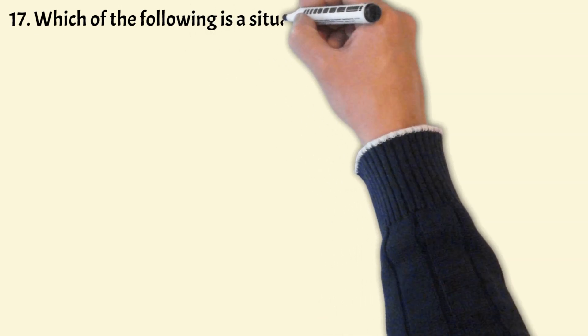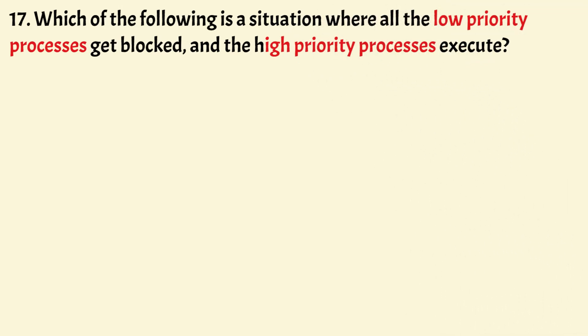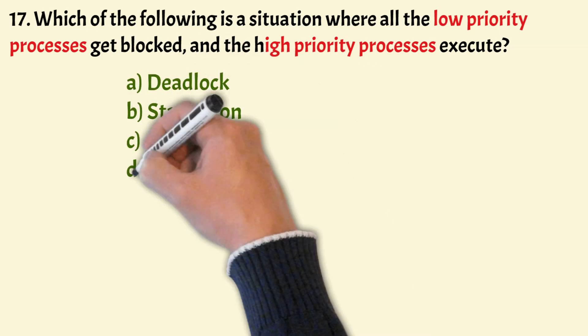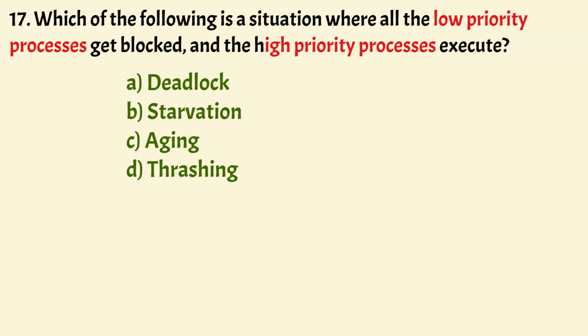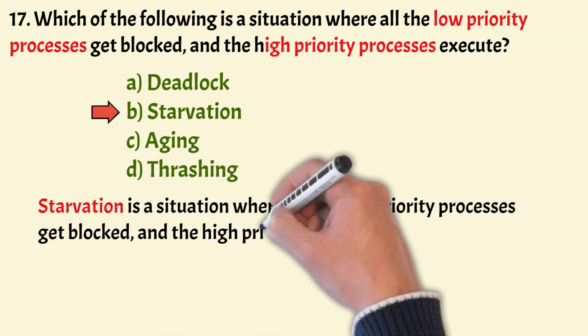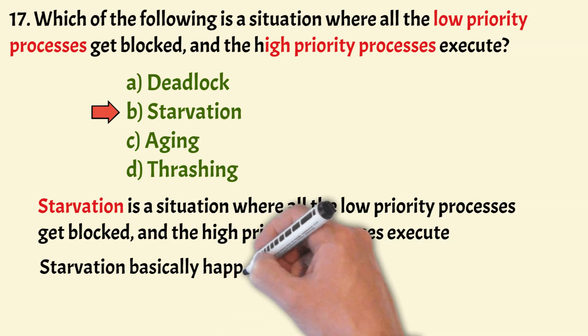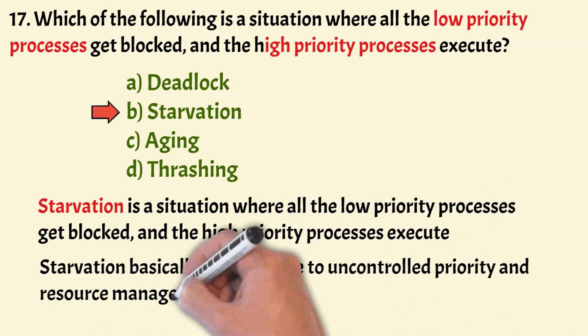Which of the following is the situation where all the low priority processes get blocked and the high priority processes execute? Options: deadlock, starvation, aging, thrashing. The correct answer is Option B, starvation. Starvation is the situation where low priority processes get blocked and high priority processes execute. Unlike deadlock, starvation is a long wait but not an infinite process. Not every starvation necessarily causes a deadlock, and starvation happens due to uncontrolled priority and resource management.